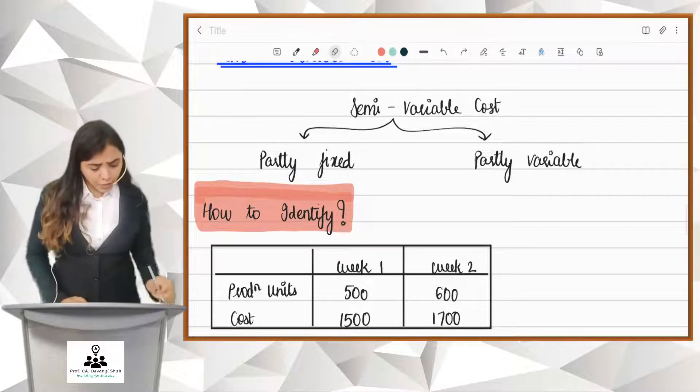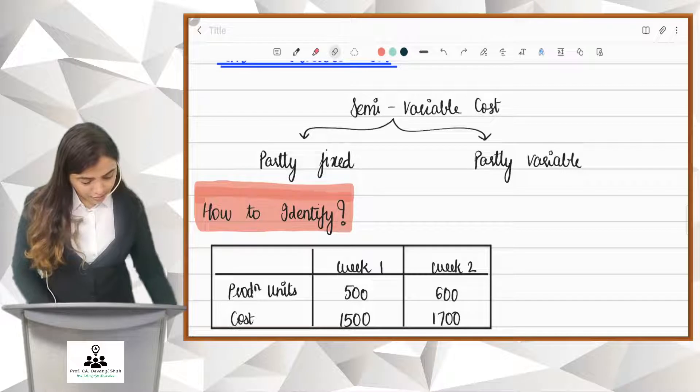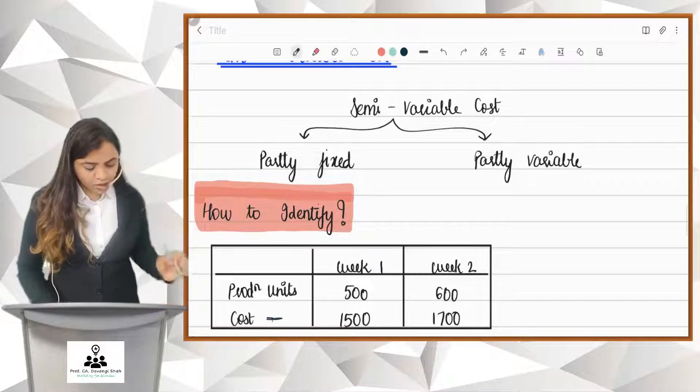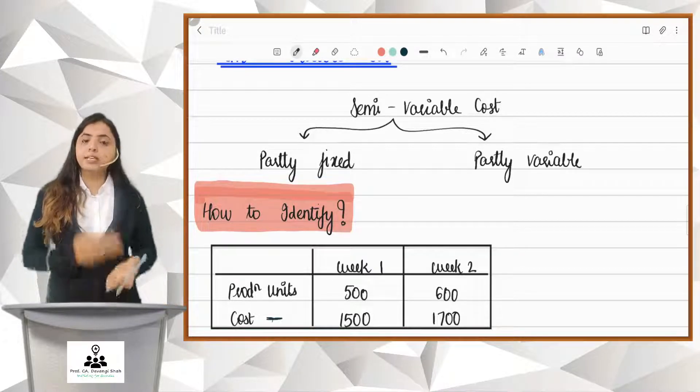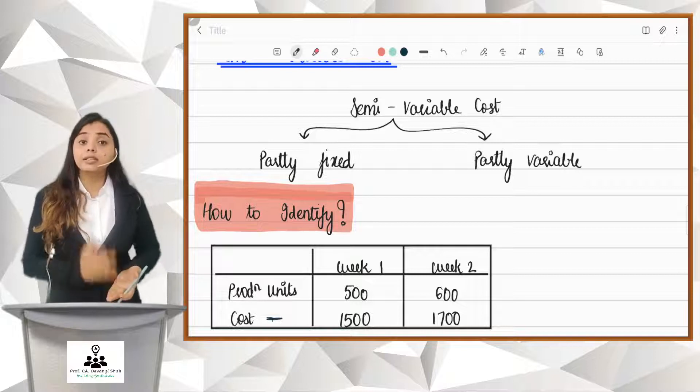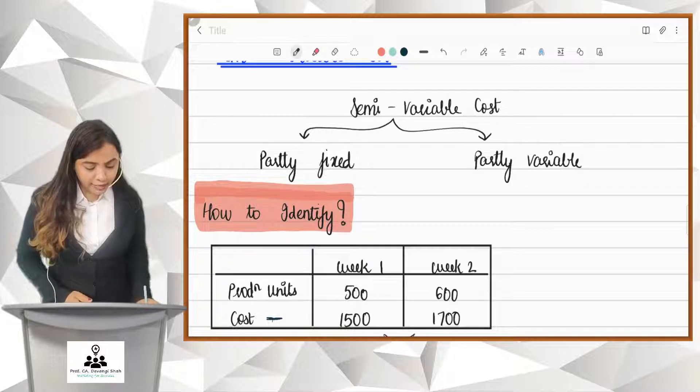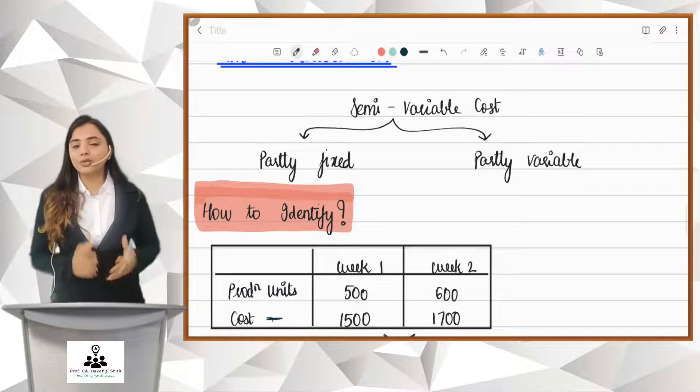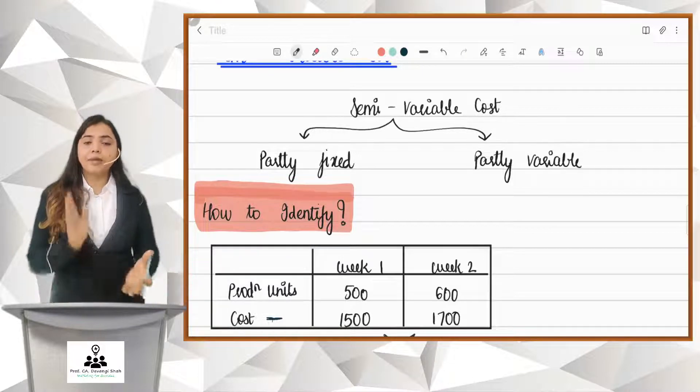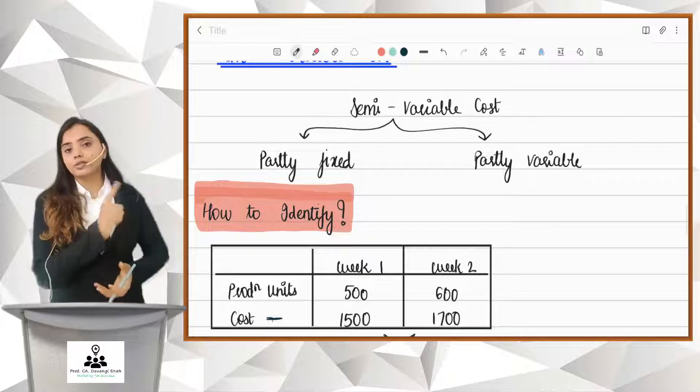Now I want to know this cost, 1500, 1700, is it variable? Is it fixed or is it semi-variable? How do I know? So, firstly, I will check. Is the amount same? For week 1, week 2, is it same? No. And because it is not same, it is not fixed cost.